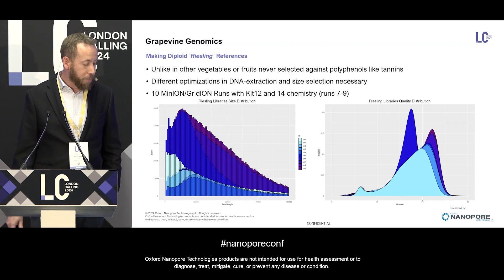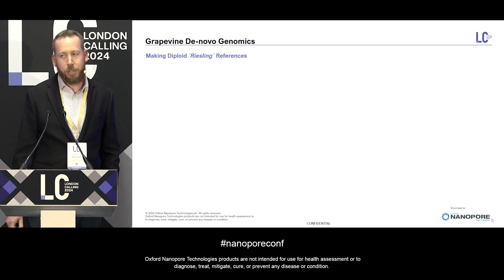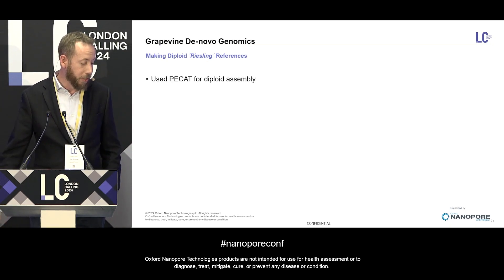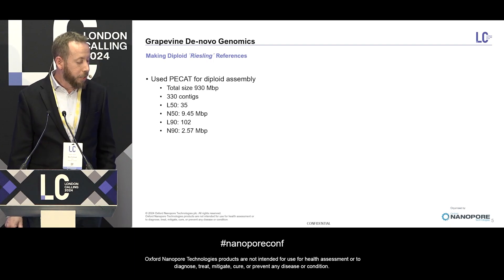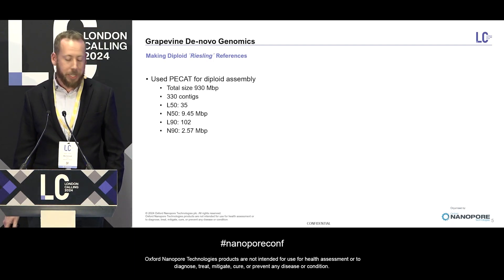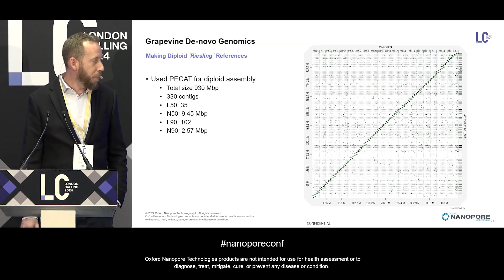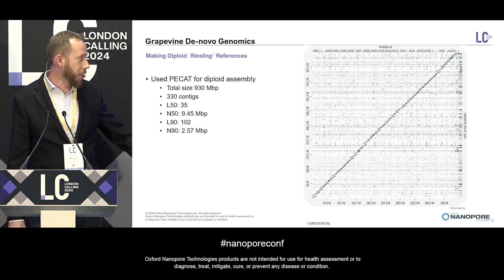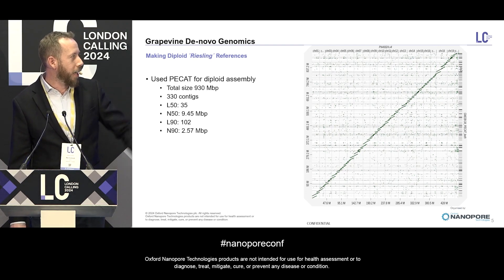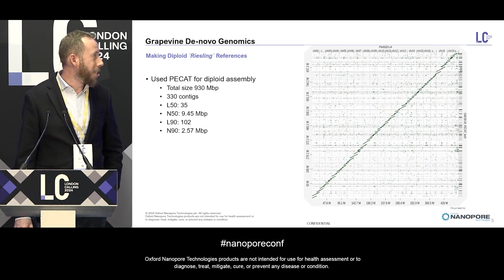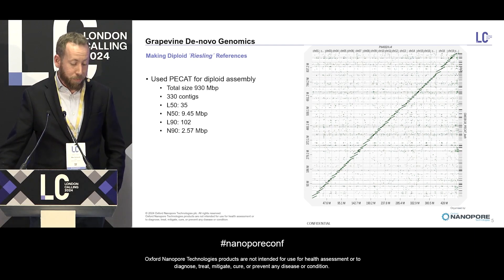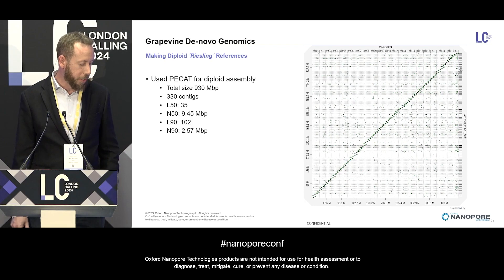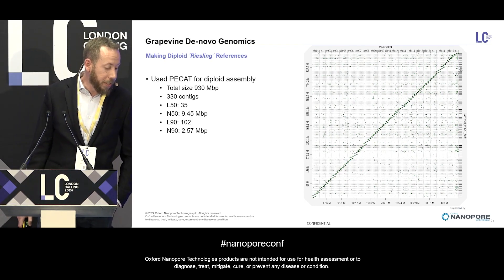I then tried making an assembly with PECAT, which is a special assembler for phasing genomes. For a diploid, it worked rather well — we got about 930 megabases of total size, which is about what you'd expect. Here's the dot plot comparing that to the haploid reference genome; you can always see two parallel lines. We got most chromosomes in fewer than five pieces, which is pretty good considering we didn't feed any Hi-C or 3D chromatin data into that.